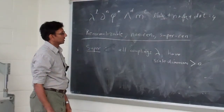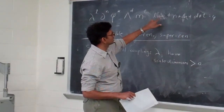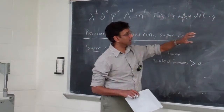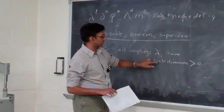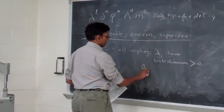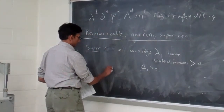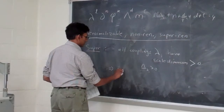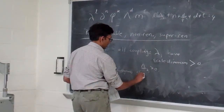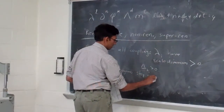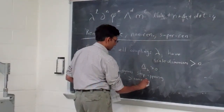Here's the thing: if you have all couplings having scale dimensions strictly greater than zero — that is, delta_lambda_i > 0 — then it means that divergences stop appearing after some finite order in perturbation theory.